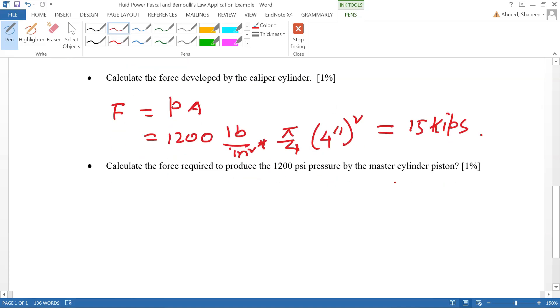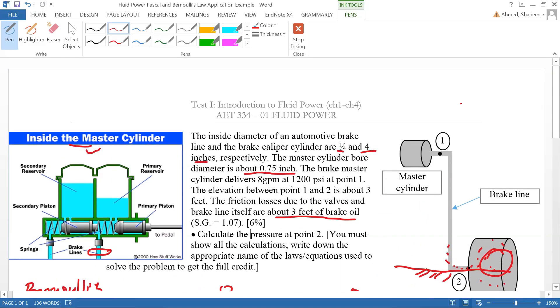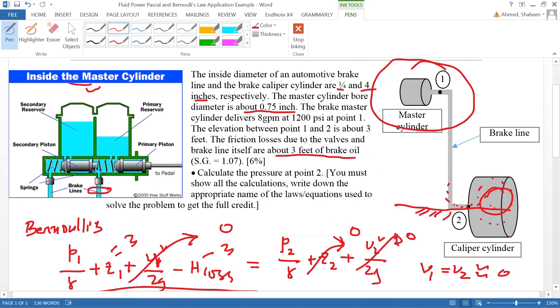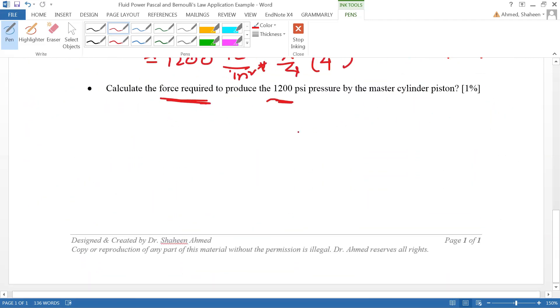The second question asks to calculate the force required to produce that 1200 psi by the master cylinder. How much force does this master cylinder need to produce that 1200 psi? The master cylinder piston diameter is given as 0.75, so we can calculate the area from there.